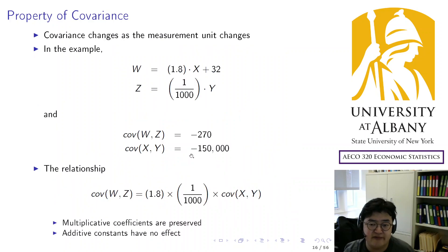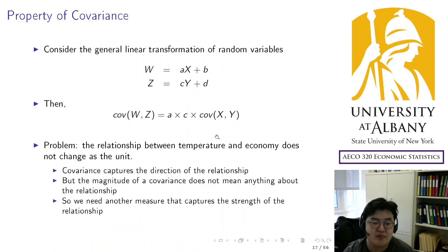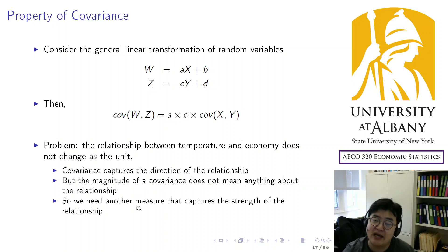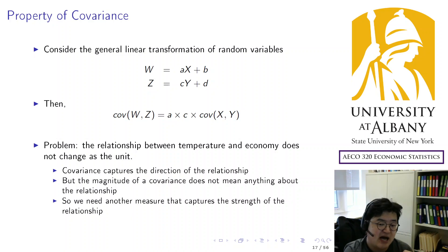For example, even if you have a covariance of 150,000, it doesn't mean the relationship is strong. Or even if the covariance is small, that doesn't mean the relationship is weak. To summarize: covariance captures direction — the sign means something — but the absolute value doesn't mean anything. As a result, we need another measure to capture the strength of the relationship. We wanted to study both direction and strength: direction is handled by the covariance sign, but strength is not yet quantified.